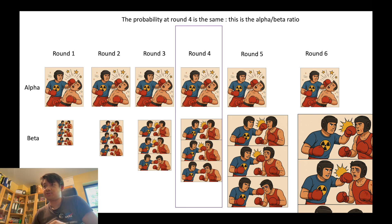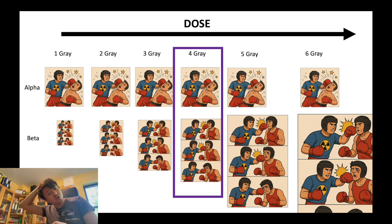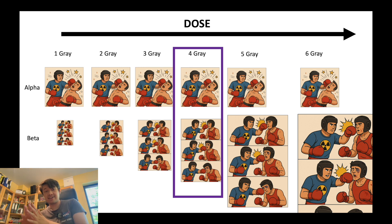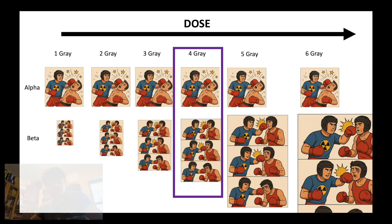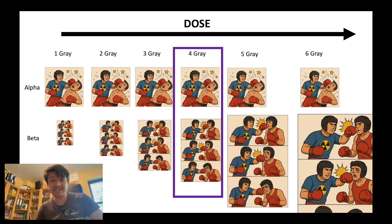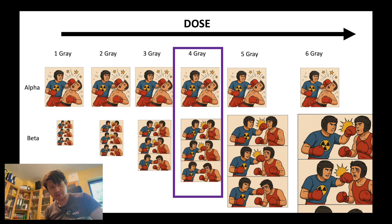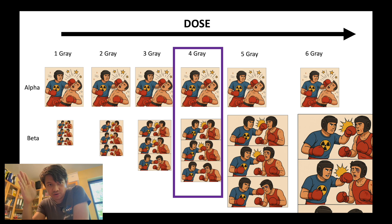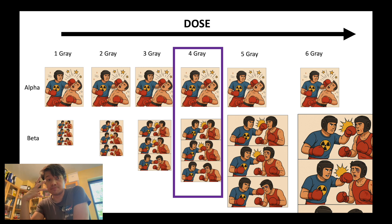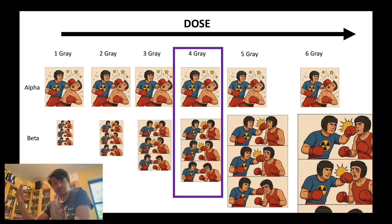Here we are in radiobiology, so we will not talk about rounds but about gray. At 4 gray, you have the same amount of cell death from alpha killing as from beta killing. This is important because each tumor has its own alpha-beta ratio — for example, 10, 3, or 1.5. Under the alpha-beta ratio, the alpha component is the major part of the killing mechanism, and above it, the beta killing becomes more important.